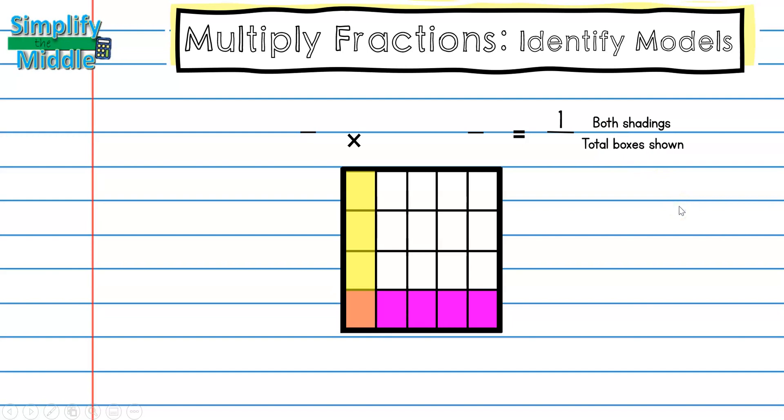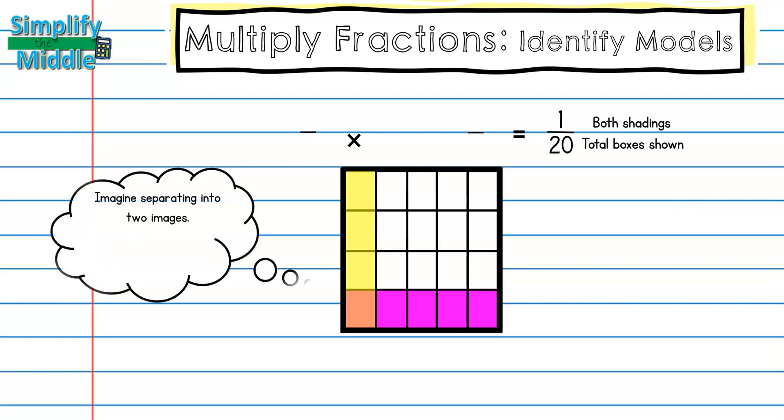Next I'm going to look at the total number of boxes shown in this image. I can see that I have going up and down 1, 2, 3, 4, and going across 1, 2, 3, 4, 5. So 4 times 5 is 20, so my product is 1/20th.